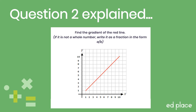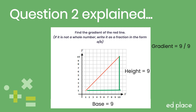In this next example, step one is to turn our line into a right-angled triangle. Step two is to count the squares to find the height and base of the triangle — the height is 9 and the base is 9. Step three: to calculate the gradient, we divide 9 by 9, so the gradient of this line is 1.